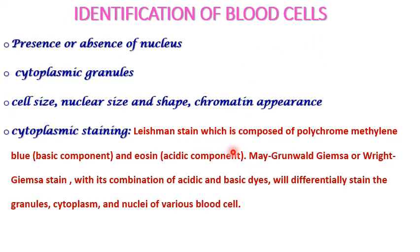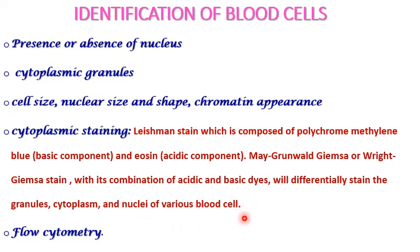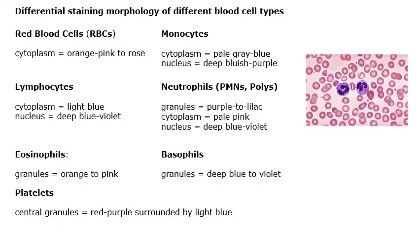Staining techniques like Leishman stain and May-Grunwald-Giemsa stain, along with a combination of acidic and basic dye, will differentially stain the granules, cytoplasm, and nucleus of various blood cells, making it easy to differentiate and identify the different types. Here you can see differential staining of blood cells, where the RBCs are red in color, and monocytes and neutrophils are also colored similarly.